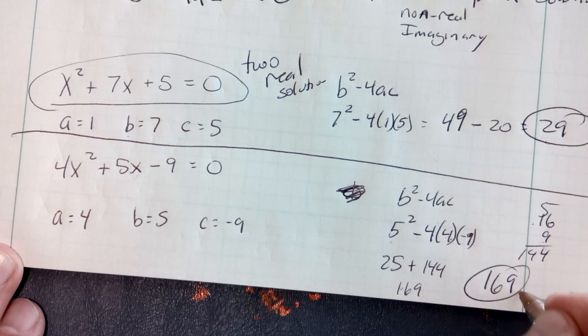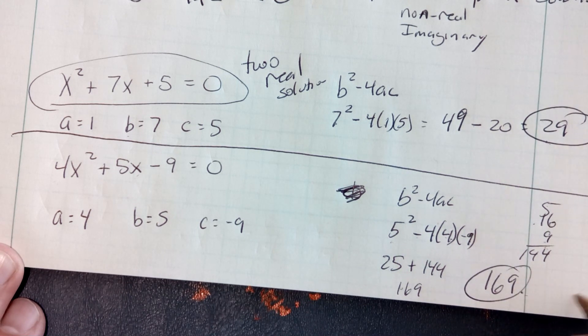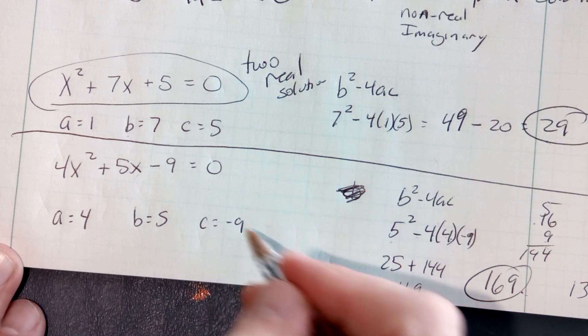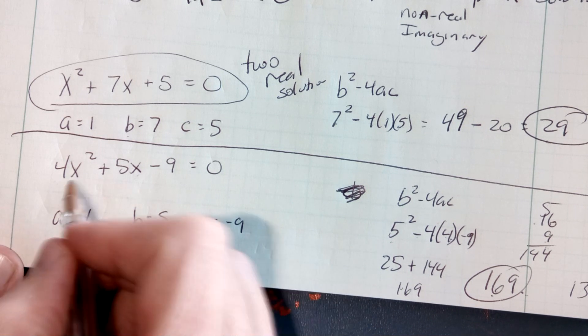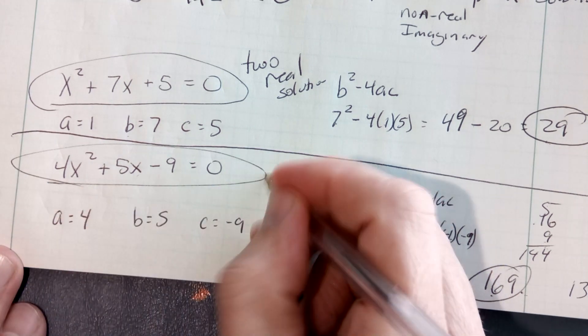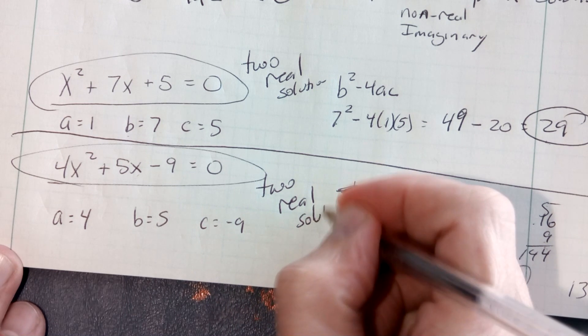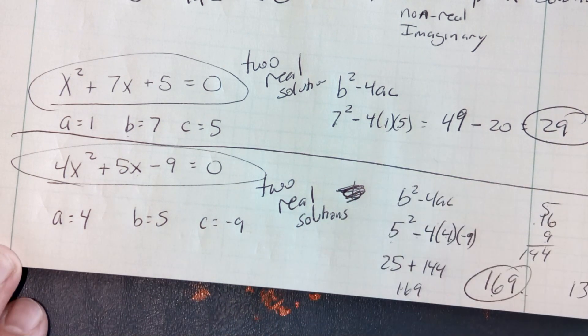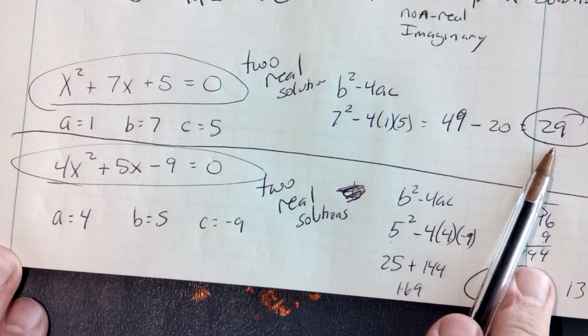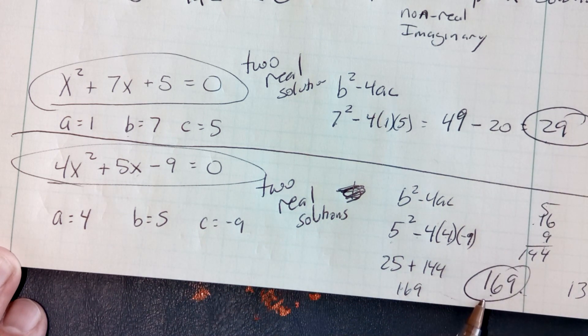169 is a perfect square. It would square root to 13. Since it's a perfect square and it's positive, I would say this quadratic has two real solutions that are actually rational. They're rational solutions and not irrational. The ones up here would be irrational. The ones down here would be rational, because that 169 was a perfect square root, and it's positive.